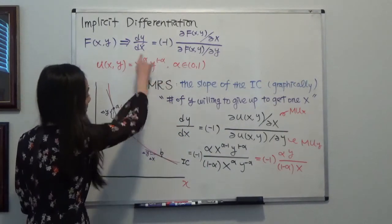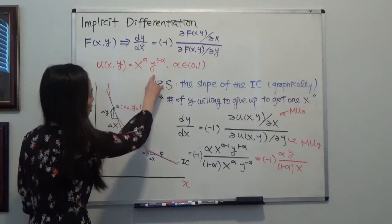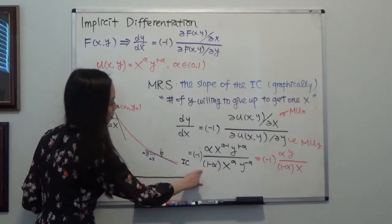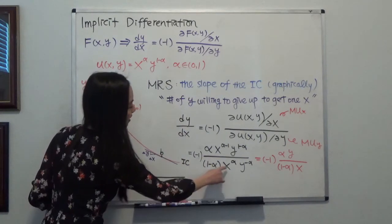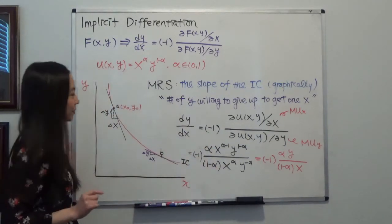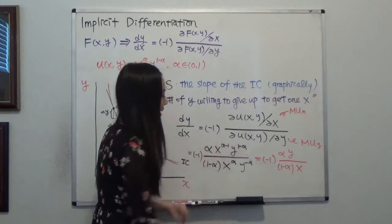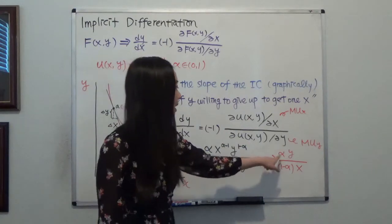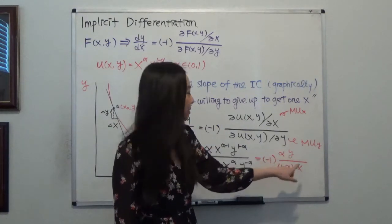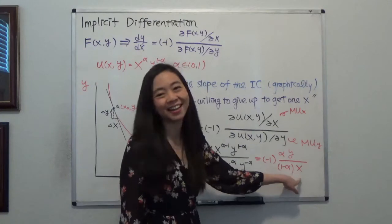And downstairs, you have partial derivative of u with respect to y. So you have 1 minus alpha here, times x to the alpha's power, times y to the minus alpha's power. And after you rearrange that, you get negative 1 times alpha y divided by 1 minus alpha x.